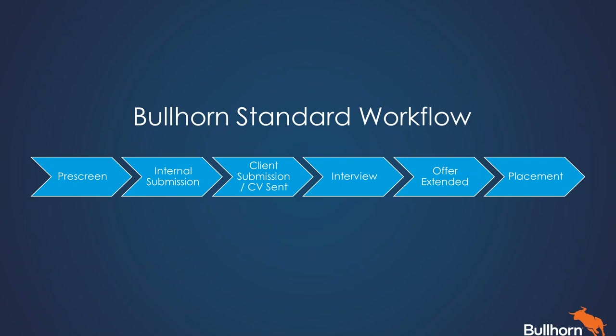To document a pre-screen, it's simply adding a note. Next, you'll see internal submission — sometimes the label says 'submission only,' but the key word is internal submission. An internal submission is an internal step — a way to identify a candidate for a particular job. You might have a great candidate, perhaps one you recently pre-screened, and you think they're a good match for one of your jobs. By internally submitting that candidate to the job, you or a colleague can go back and review that candidate for further consideration.